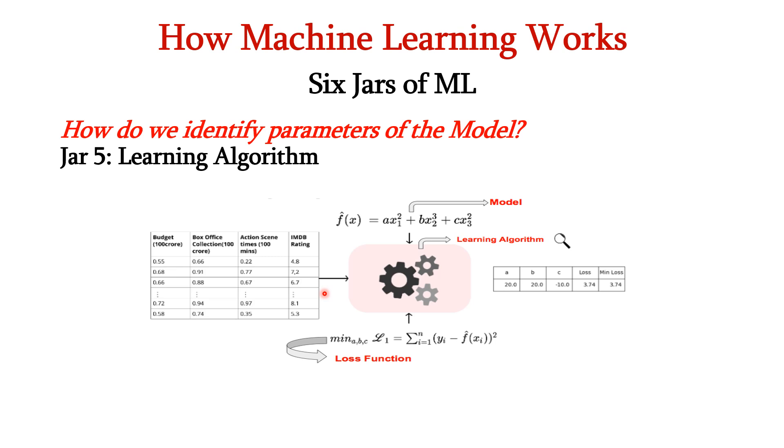Next, we have to determine the parameters of the model. Here we can use the learning algorithm. We can see that here we have the model f(x) = ax1² + bx2² + cx3². Here x1, x2, x3 are inputs. a, b, c are the parameters which have to be identified by the learning algorithm. Our ultimate goal is to minimize the loss function.